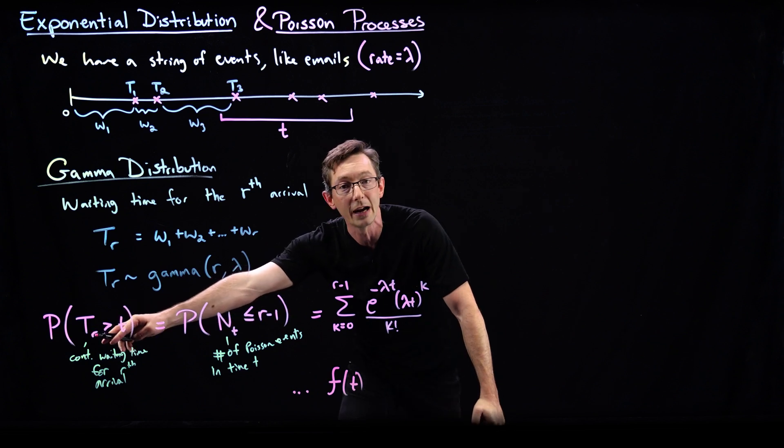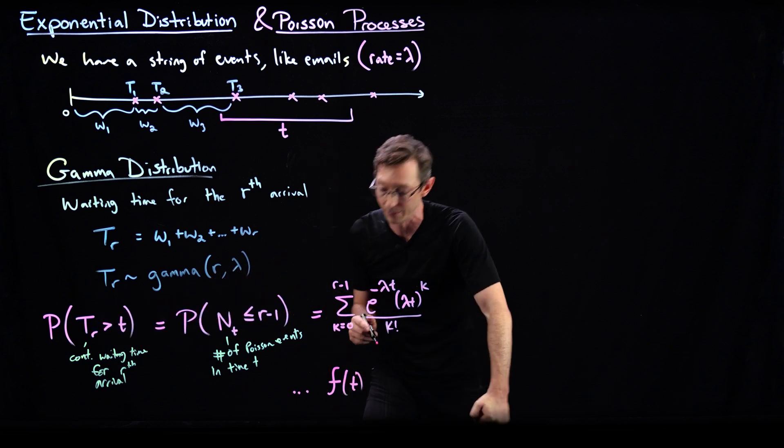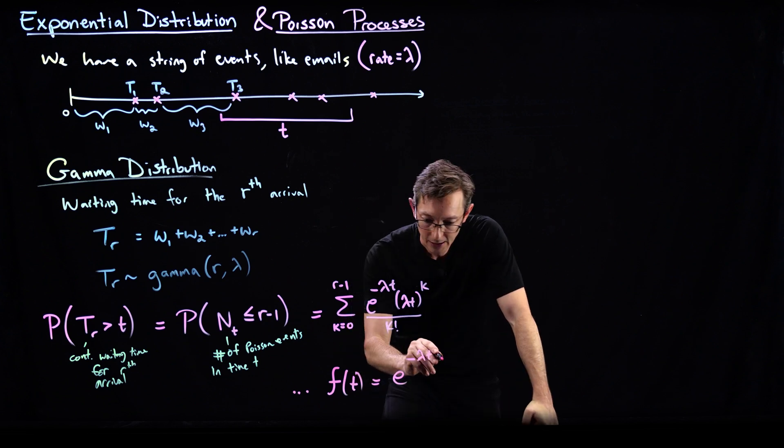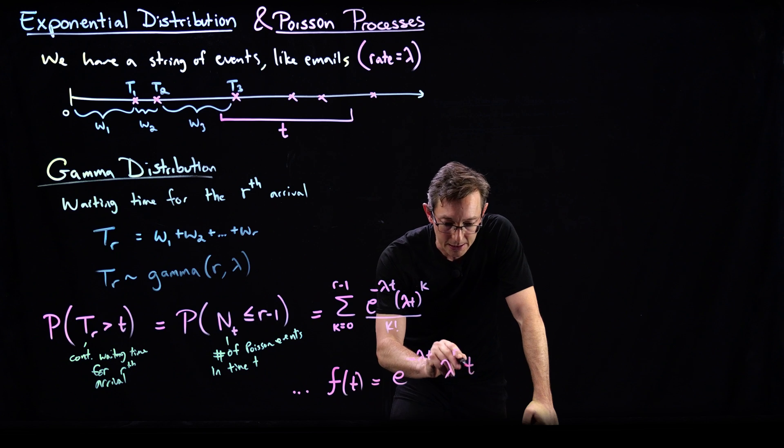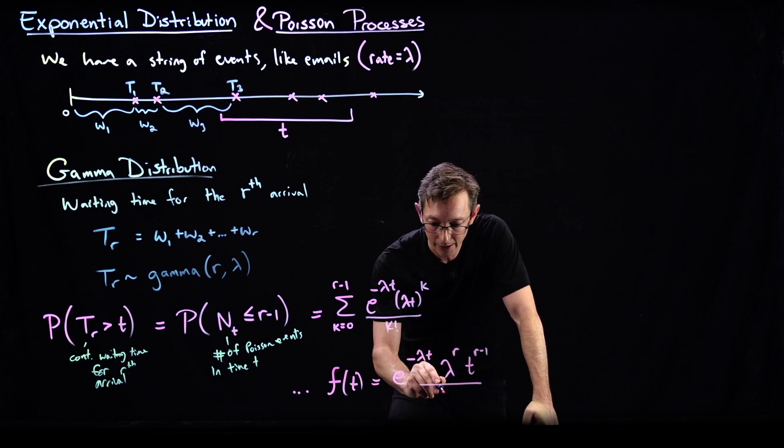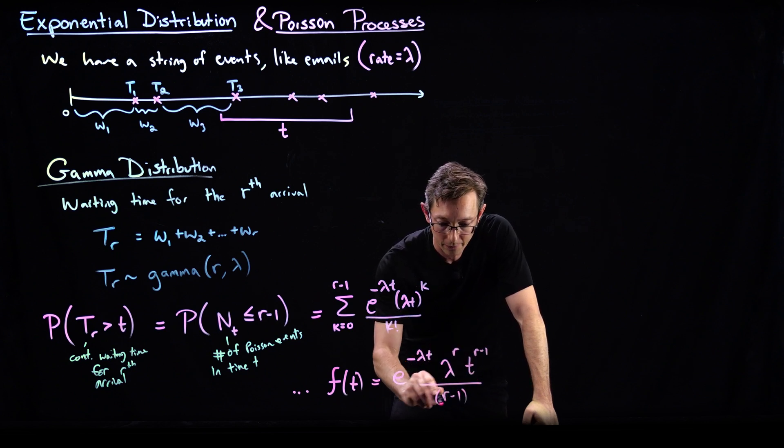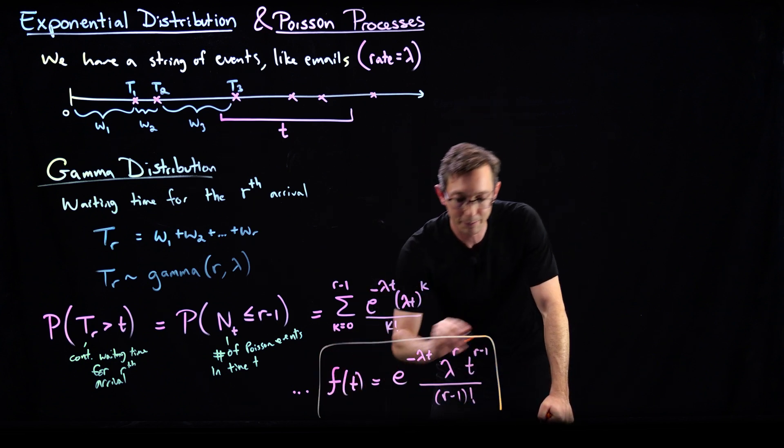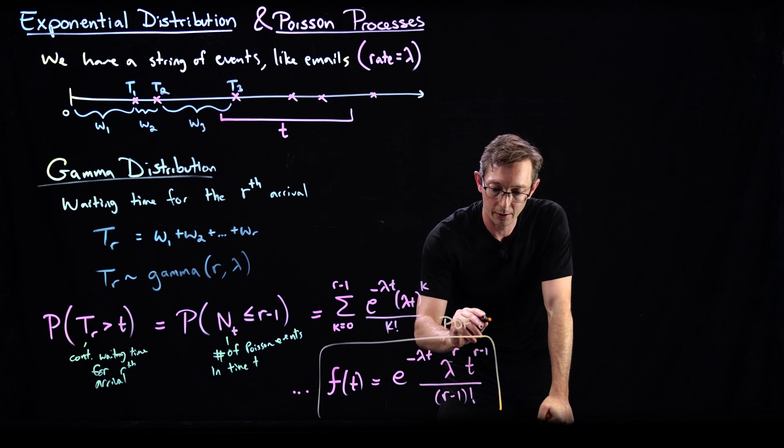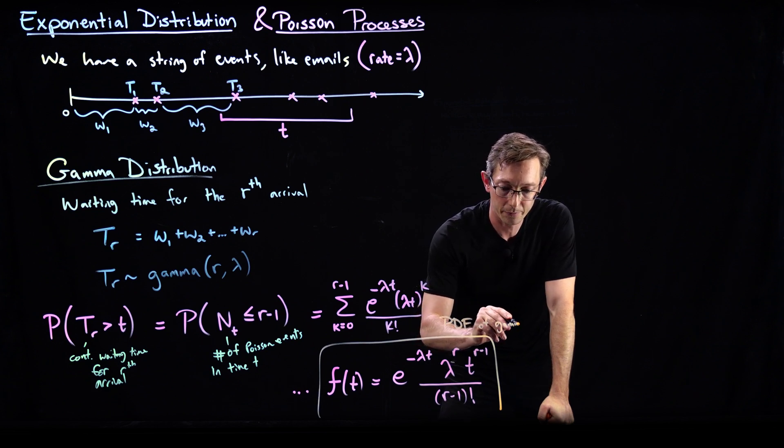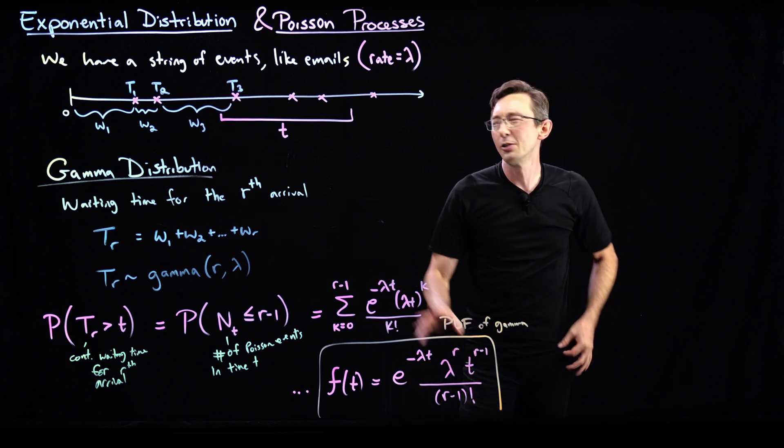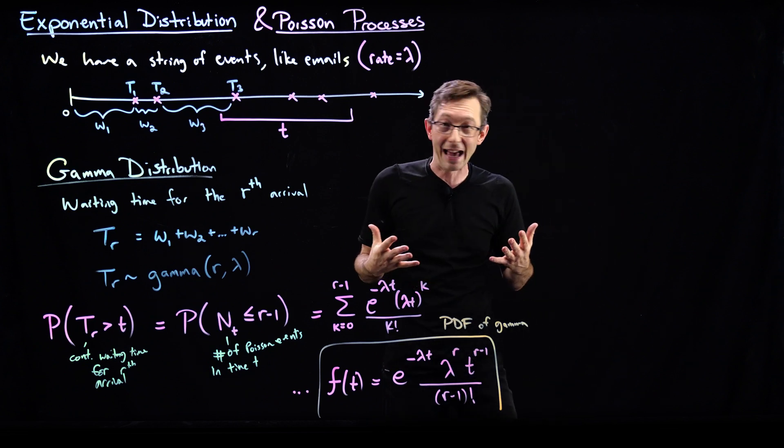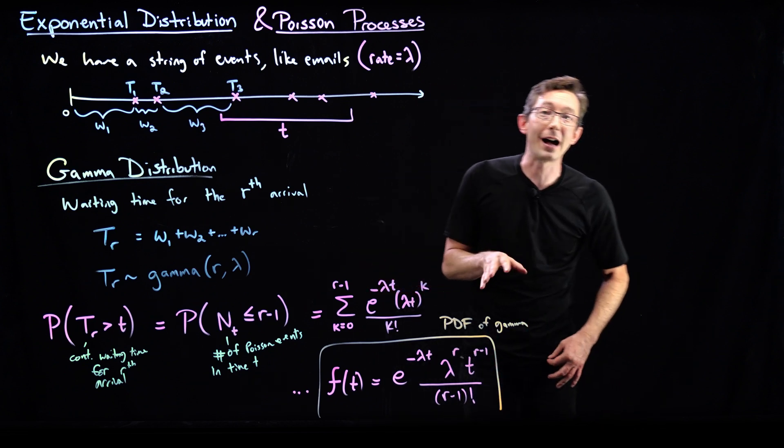So the probability density function f of t, the probability that my arrival, my rth arrival happens exactly at time t is equal to e to the minus lambda t times lambda to the rth power t to the r minus one power divided by r minus one factorial. This is the gamma distribution. This is the pdf of the gamma distribution. And this is super, super useful. So I have phrased it as, at what point does the rth email come in? That doesn't sound that super duper useful. But you can use this for lots of other things.